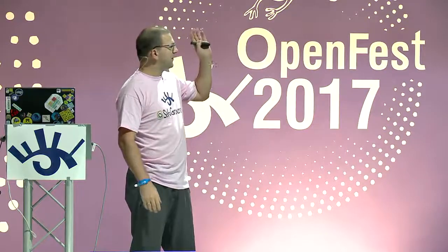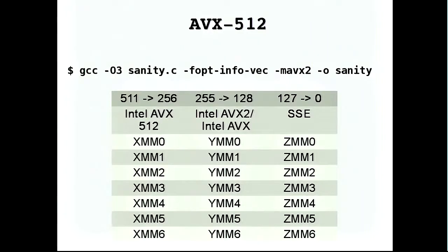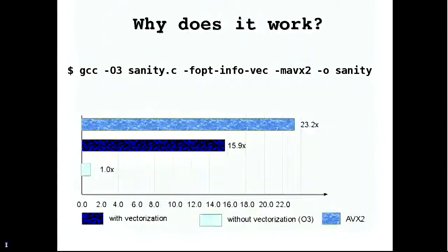When we skip to AVX-512, what's happening is we have quadrupled the data we can send to the CPU. The CPU continues to do the same task in the same time but with four times the amount of data. Comparing this with 64-bit registers, you can see the significant difference.